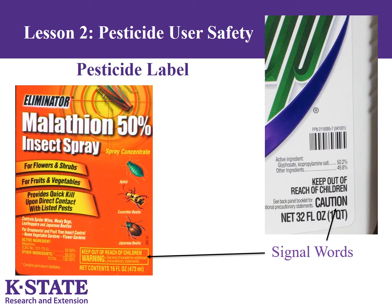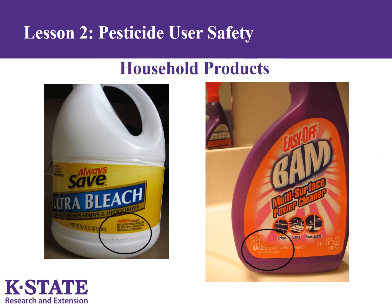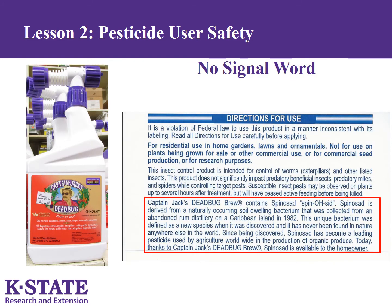Now that you have a better understanding of signal words, can you find them on these two product labels? It is important to point out that many common household cleaning products, such as bleach, exhibit a danger signal word due to their corrosive nature. Pesticide products that fall into the lowest toxicity category for all routes of exposure are not required to display a signal word, as is the case with the Captain Jack's Dead Bug Brew label.